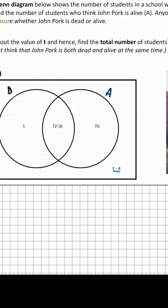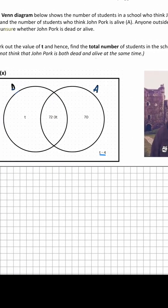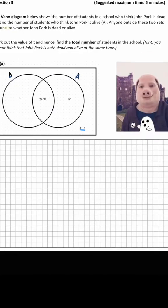Work out the value of T and hence find the total number of students in the school. We are given a hint: you cannot think that John Pork is both dead and alive at the same time. This means that the intersection equals 0 because you can't think that John Pork is both dead and alive at the same time.